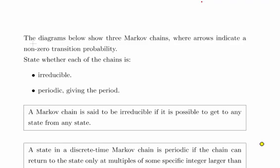In this presentation we're going to look at Markov chains. We have three Markov chains depicted below where the arrows indicate non-zero transition probabilities. What we have to do is state in each of the three cases: are they irreducible, and are they periodic? If they are periodic, give the period.